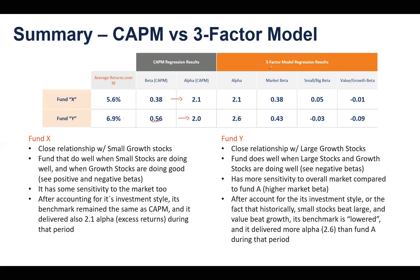The more sophisticated three-factor model breaks down this beta risk by controlling for other risk components that have been shown to have a close relationship with returns. This three-factor model controls for the fact that small stocks outperform large stocks in the long run, and also that value stocks outperform growth stocks in the long run. When controlling for that, we can run a multivariable regression.